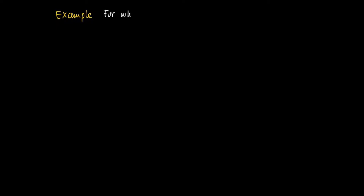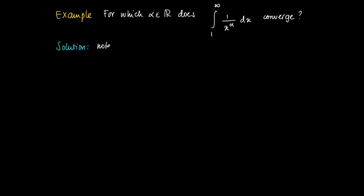Here's the following question. We look at functions f(x) = 1 over x to the power alpha. Intuitively, if x to the power alpha goes to infinity fast enough, then the integral from 1 to infinity of 1 over x to the power alpha will exist. We have considered 1 over x squared and found that the integral from 1 to infinity of 1 over x to the power alpha converges for alpha equals 2. So here we try to find an answer to the more general question: for which alpha does such an integral exist?